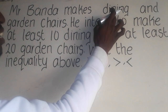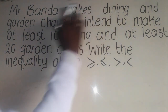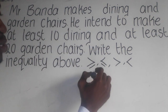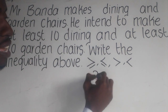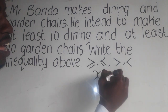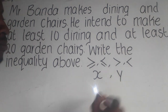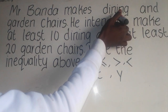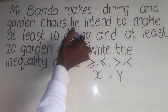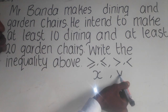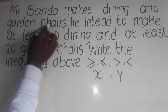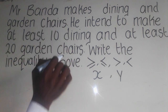You need to understand that the many objects which we are given here are the dining and the garden chairs. In this case, we are supposed to use x and y. This x will represent the number of the dining chairs. This y will represent the number of garden chairs.